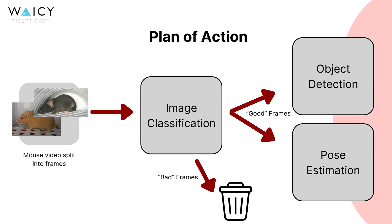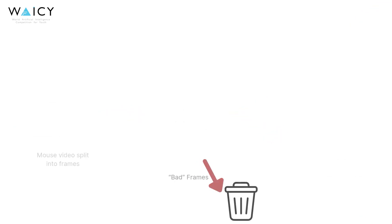If the mouse is not oriented parallel to the camera, the size of its features may be subject to perspective distortion. Good frames are passed to the object detection and pose estimation models, where the size or position of the body, eye, and ear is detected.